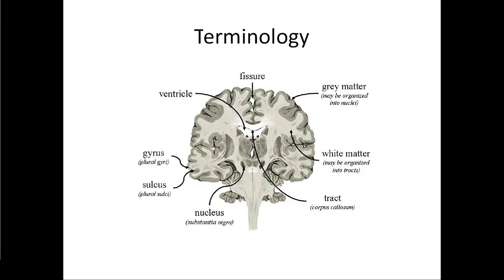And then we have nuclei. Nuclei is a really overloaded word in science. You've encountered the nuclei of cells and the nuclei of atoms — this time we're talking about something completely different. Nuclei in the brain are just really dense areas of gray matter, basically dense areas of cell bodies with a particular function, and we're going to see them in several different parts of the brain.